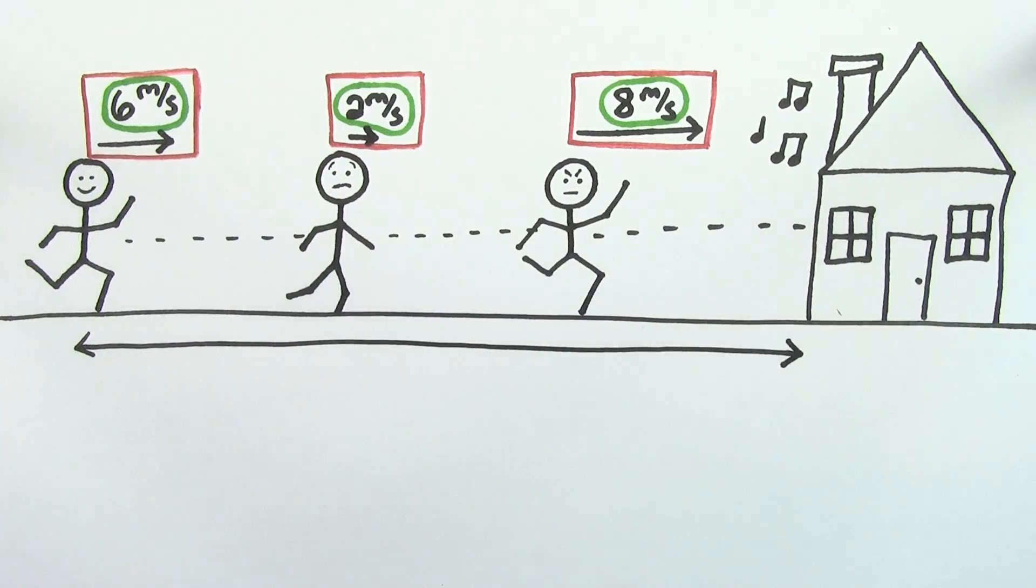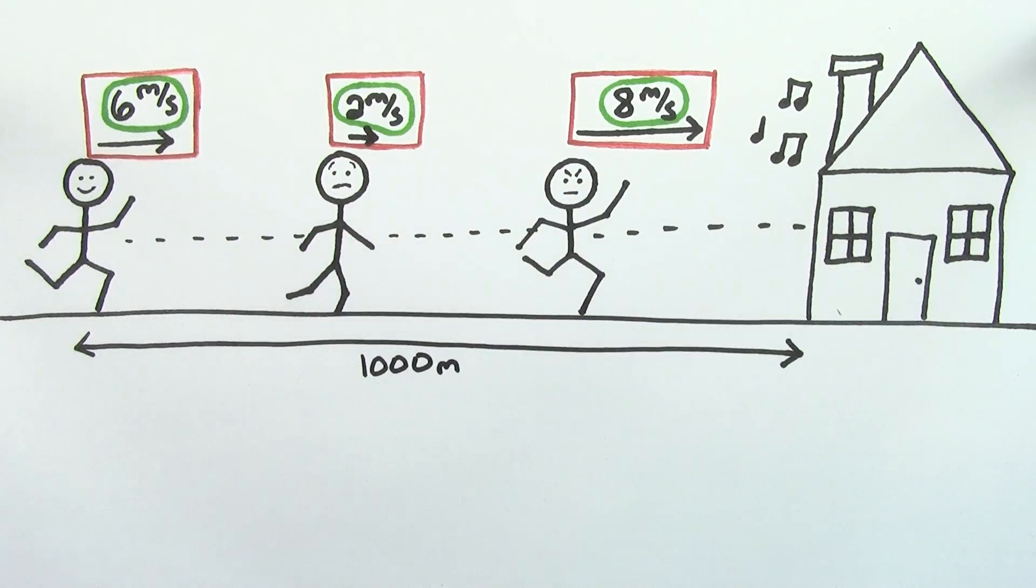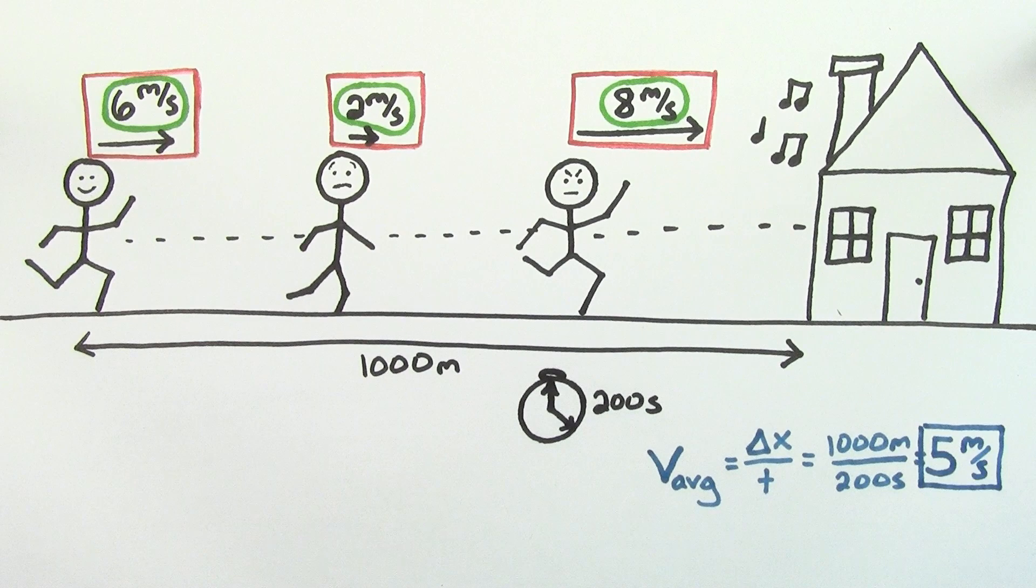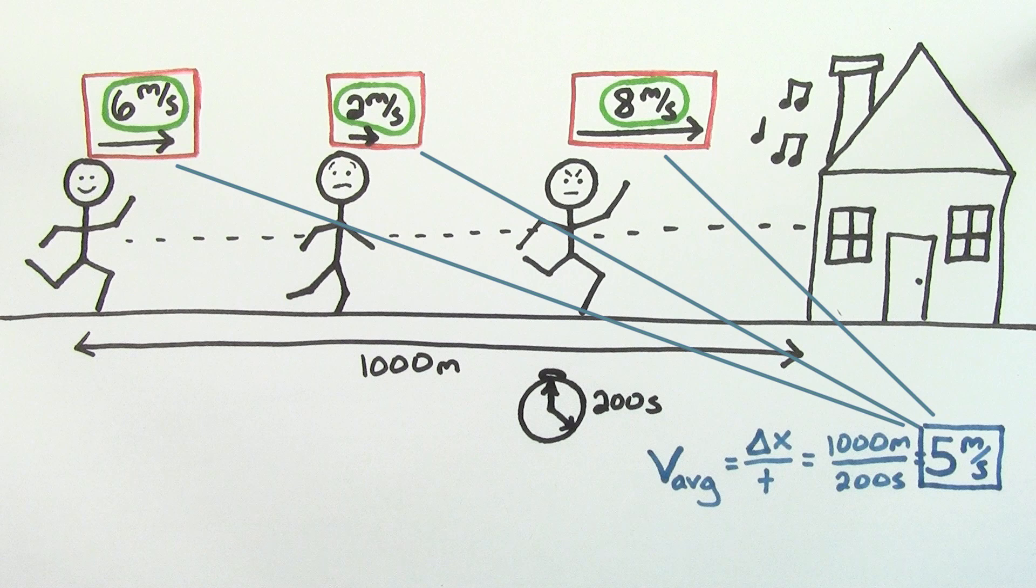Note that this is different from the average velocity. If your home was a thousand meters away from school, and it took you a total of 200 seconds to get there, your average velocity would be 5 meters per second, which doesn't necessarily equal the instantaneous velocities at particular points on your trip.